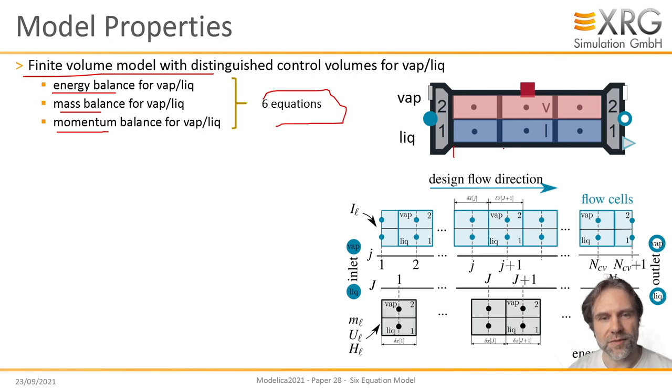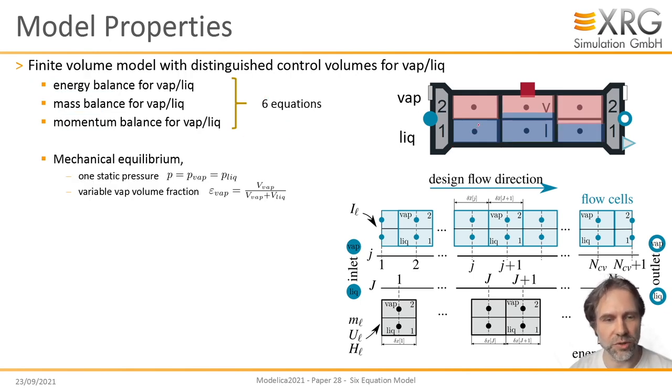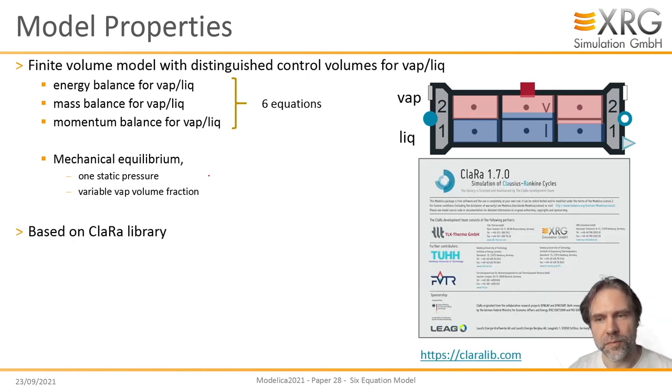Now, if you look at it, we have the pipe and it's subdivided into sections. Each section has a parameter constant length, but inside each section, we assume mechanical equilibrium. What does it mean? We assume there is one static pressure, but the volume fraction of the vapor and the liquid phase can change dynamically. So, what we effectively do is a finite volume discretization based on finite volumes that change in time.